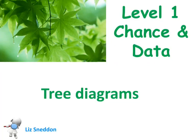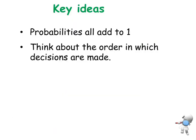Let's have a look at drawing tree diagrams and calculating probabilities from them. A couple of key ideas: all of the probabilities have to add up to 1, and I also want to think about the order in which decisions are made.